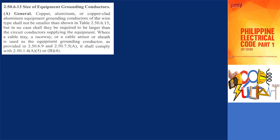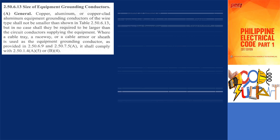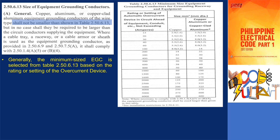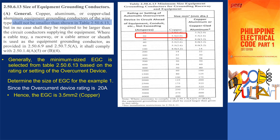To determine the size of the equipment grounding conductor, refer to section 2.50.6.13. Copper, aluminum, or copper-clad aluminum equipment grounding conductors of the wire type shall not be smaller than shown in table 2.50.6.13. Table 2.50.6.13 shows the rating of the overcurrent protective device and the corresponding size of the equipment grounding conductor. For this project, we will use copper conductor as ground. Therefore, for the previous example, the size of the equipment grounding conductor shall be 3.5 square millimeters. The equipment grounding conductor shall not be larger than the circuit conductor.